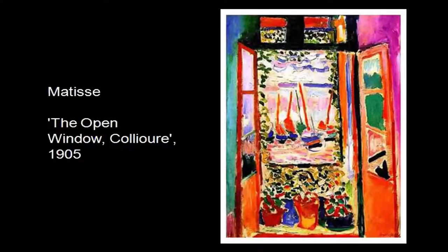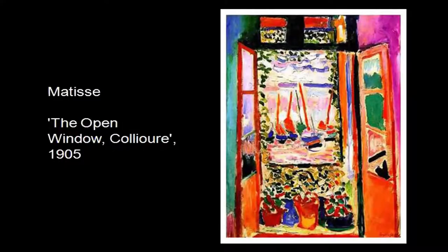Until Fauvism, colour played a slightly subservient role, in the sense that contour lines defined the form first, followed by colour. But in Fauvist paintings you see just the reverse happening. Colours — the body of colour, the pigments, the presence of the colours — these things are playing the defining role for the forms.